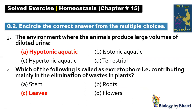MCQ number three: the environment where the animals produce large volumes of dilute urine. Dilute urine is produced when there is extra water in the environment, meaning water content is high. That is called a Hypotonic Aquatic Environment. Hypo means low, tonic means solute — so less solute in the environment means higher water content.